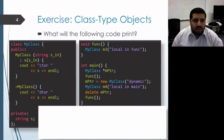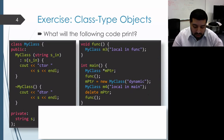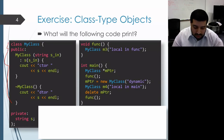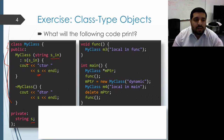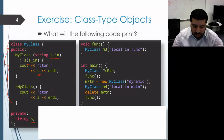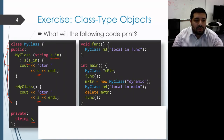This exercise will reason about when the constructor and the destructor for a class type object is called. We have a MyClass class whose constructor takes in a string and stores it as a member variable. The constructor prints out CTOR and then the string passed in. When a MyClass object dies, its destructor gets invoked and prints out DTOR and then the string that was passed to the constructor when the object was created.